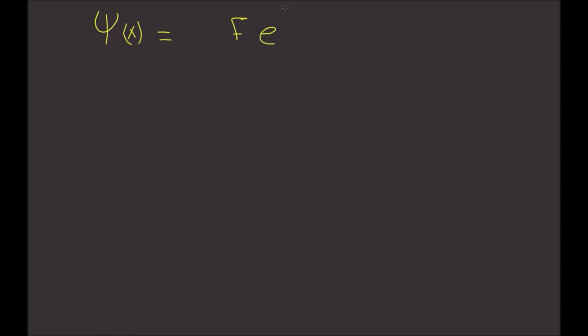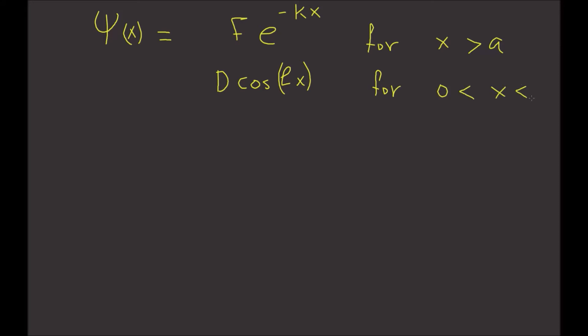As promised, we're going to normalize the wave function from the previous video, video number 24. The wave function psi of x is given by F times e to the minus kx, for x greater than a. And then we have D times cosine of L times x, for x between 0 and a. And then we have psi of minus x for x less than 0.